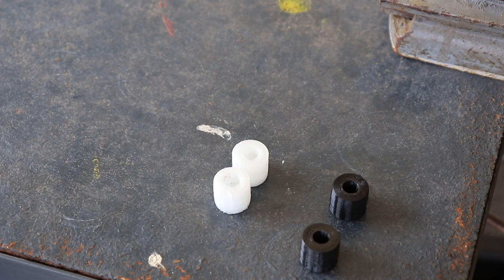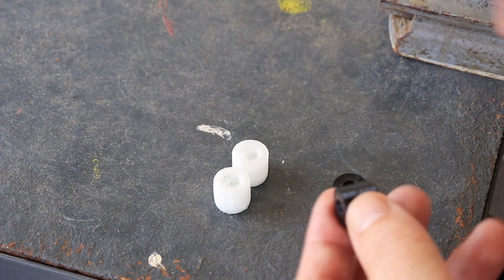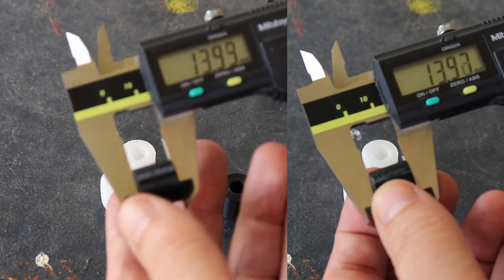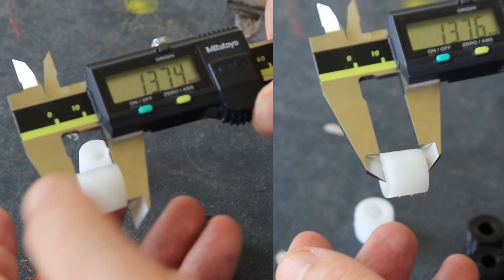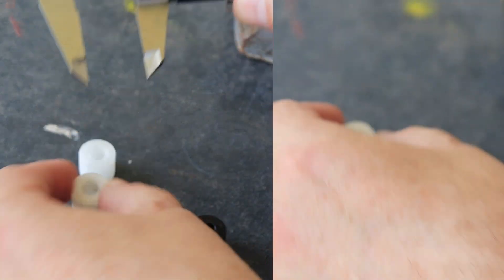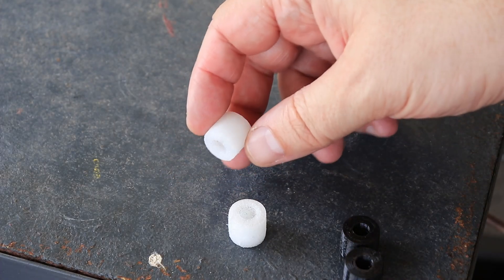Now after approximately 20 minutes without load let's measure the dimension to see their permanent deformation. The original size is 15 millimeters. Some more permanent deformation on antibacterial TPU.